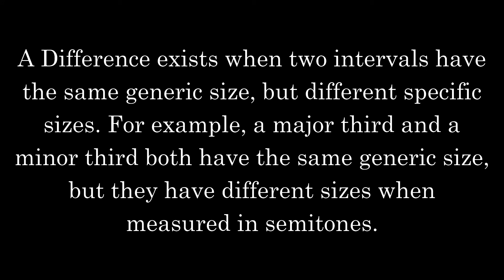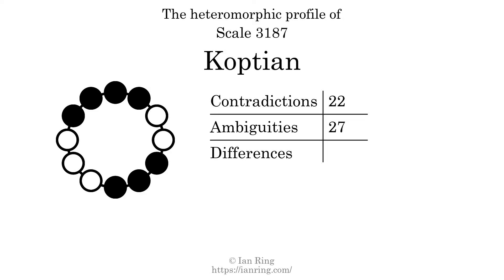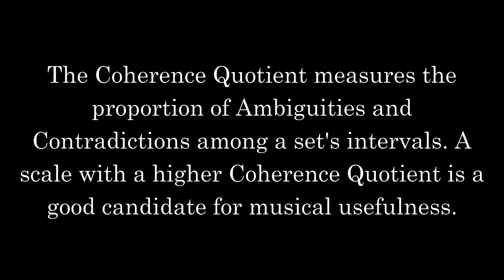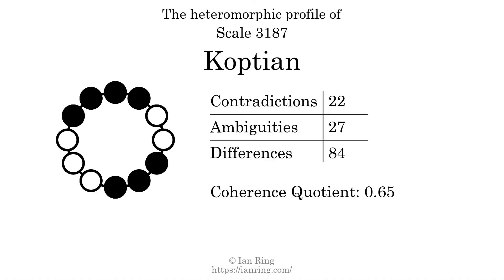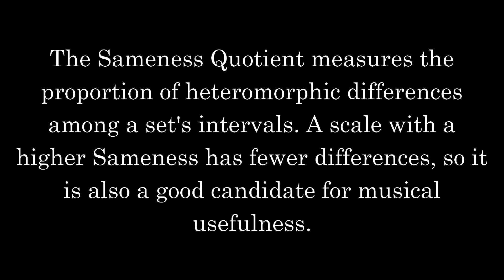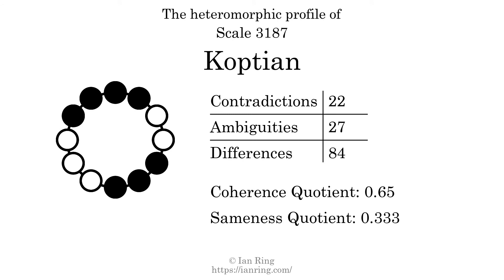A difference exists when two intervals have the same generic size but different specific sizes — for example, a major third and a minor third both have the same generic size, but different sizes in semitones. The number of differences in this scale is 84. The coherence quotient measures the proportion of ambiguities and contradictions among a set's intervals. A scale with a higher coherence quotient is a good candidate for musical usefulness. The coherence quotient is 0.65. The sameness quotient measures the proportion of heteromorphic differences. A scale with a higher sameness has fewer differences, so it is also a good candidate for musical usefulness. The sameness quotient is 0.333.